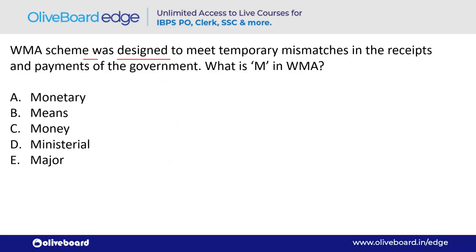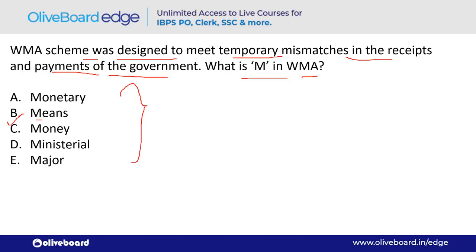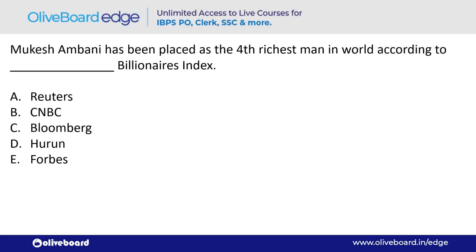The WMA scheme was designed to meet temporary mismatches in the receipts and payments of the government. What does 'M' stand for in WMA? WMA stands for Ways and Means Advances.